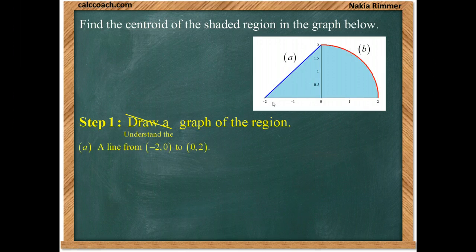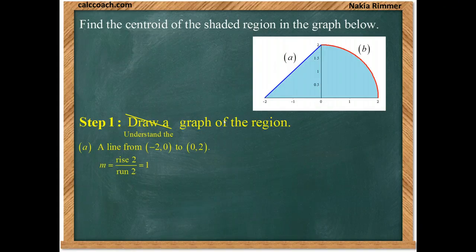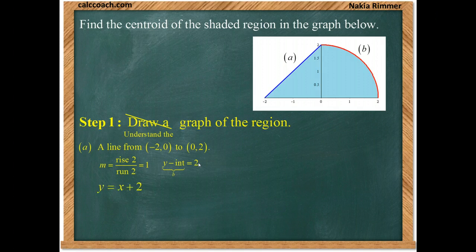Part A is a line that goes from negative 2, 0 up to 0, 2. We can quickly get the equation of that line. The rise is 2 and the run is 2, so the slope is 1. The y-intercept is 2, where it intersects the y-axis. So m is 1 and b is 2, giving us y equals x plus 2.